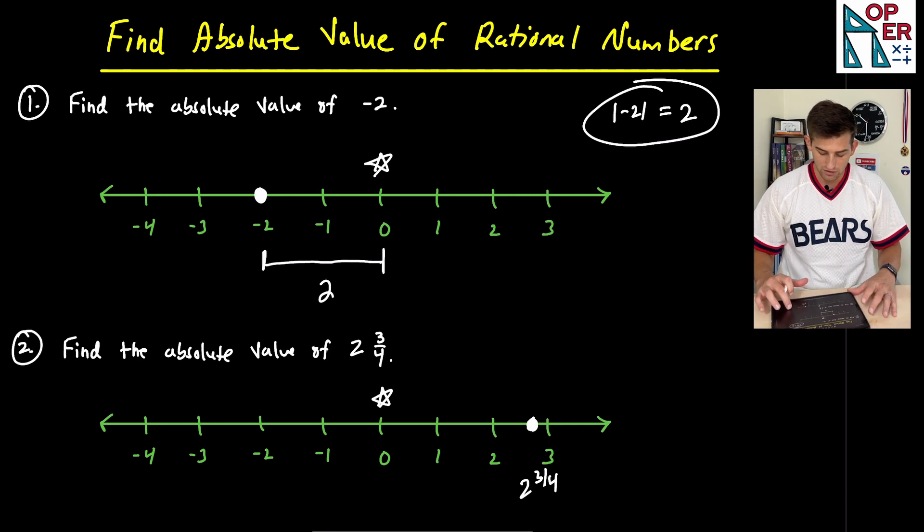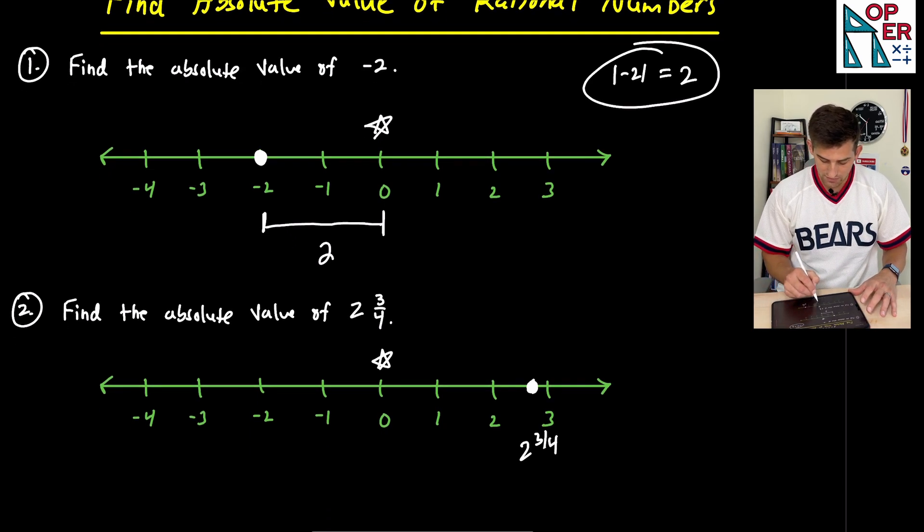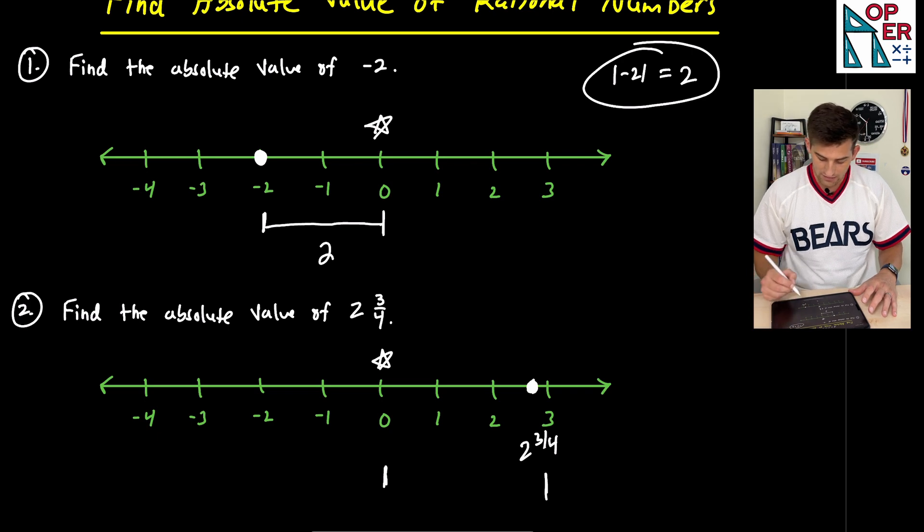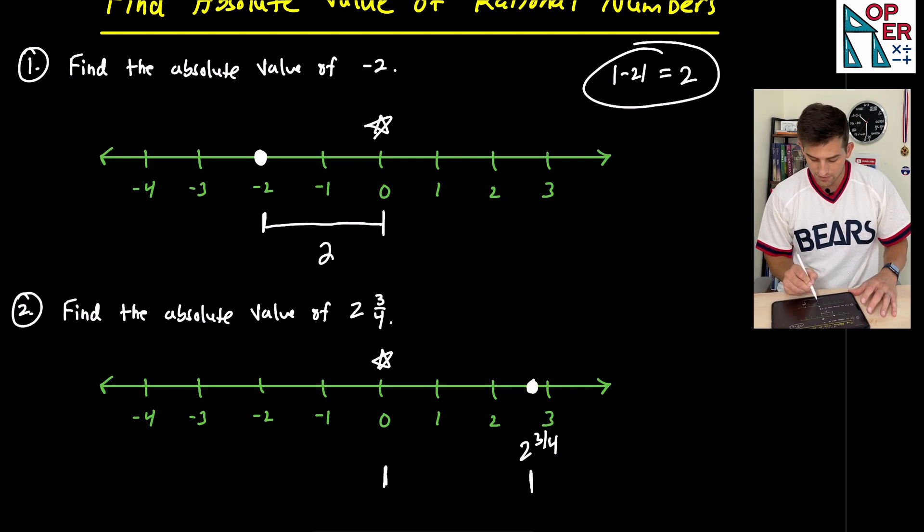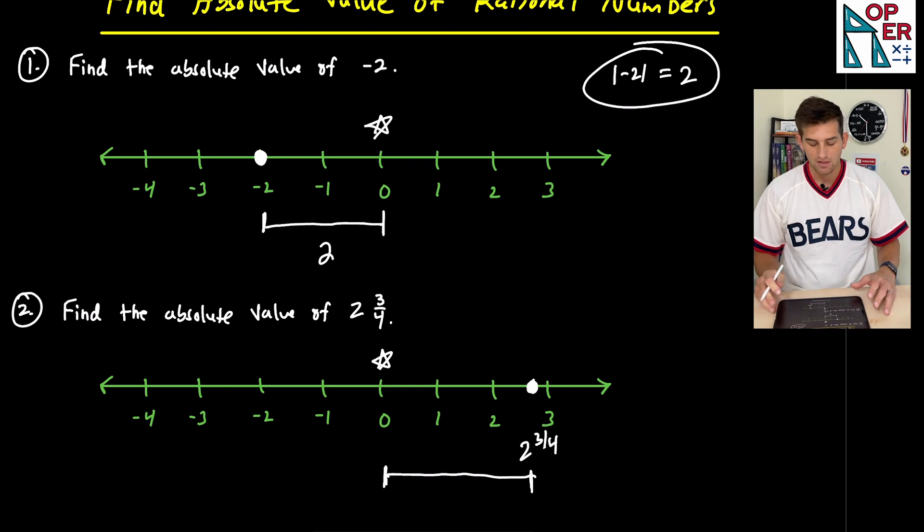So now once again, we're going to look at where zero is and also where our mark at two and three fourths was. So now if we draw our line there, let's think about this.